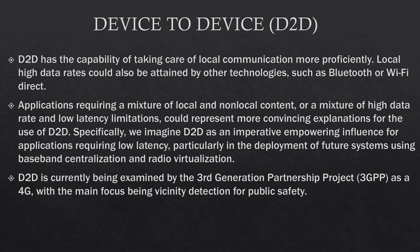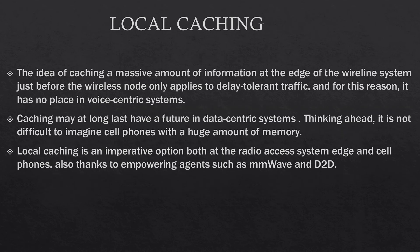D2D is currently being examined by the 3rd Generation Partnership Project, 3GPP, as a 4G feature with a main focus being proximity detection for public safety. The next is local caching. The idea of caching a massive amount of information at the edge of a wireline system just before the wireless node only applies to delay-tolerant traffic, and for this reason it has no place in voice-centric systems. Caching may at last have a future in data-centric systems. It is not difficult to imagine cell phones with a huge amount of memory. Local caching is an imperative option both at the radio access system edge and on cell phones, also thanks to enabling agents such as millimeter wave and D2D.